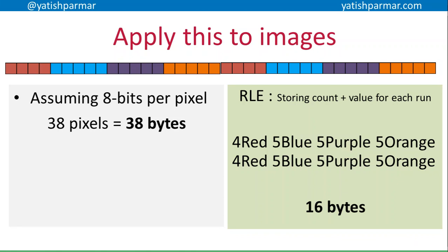That could be compressed down to 16 bytes, using one byte for the count and one byte for the data item. Obviously if you had 24 bits per pixel, you would see a significantly reduced file size when using run length encoding to compress it.